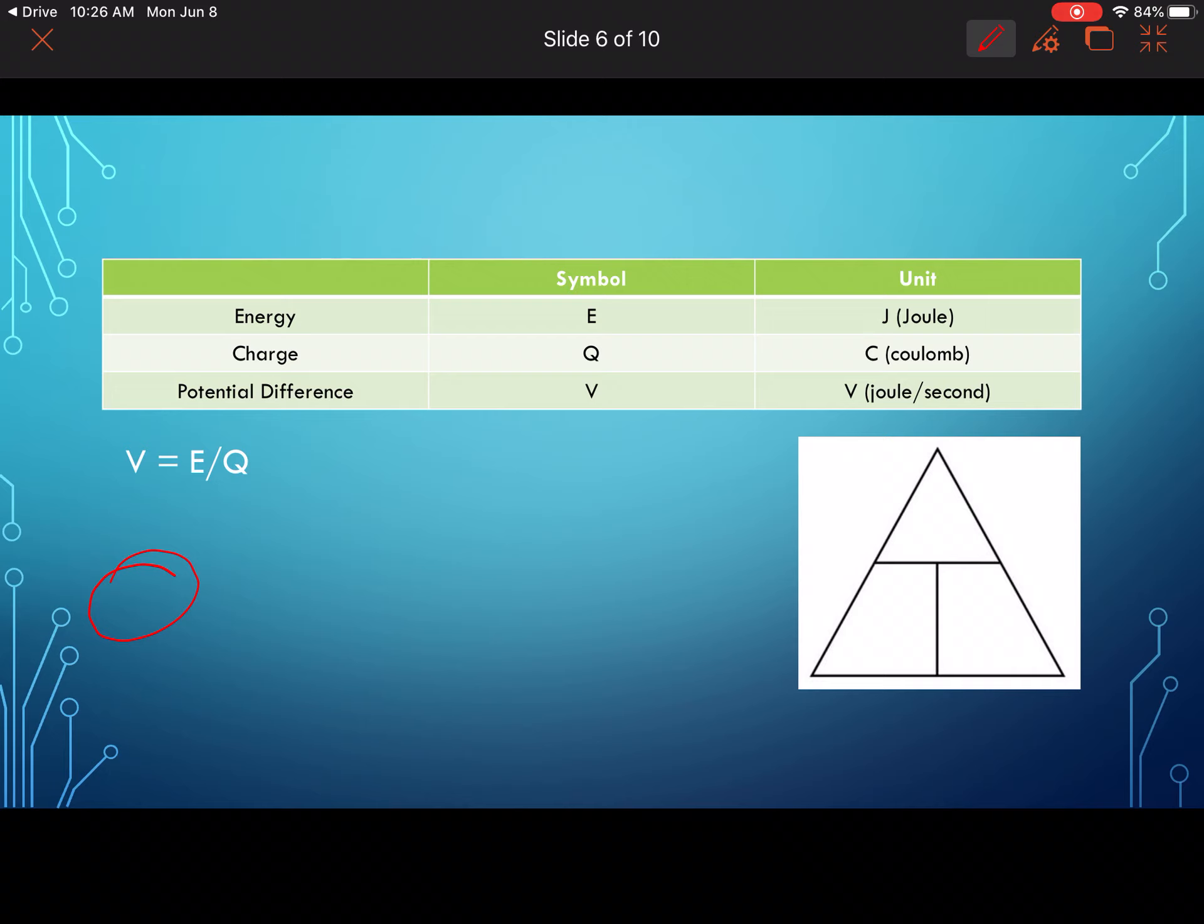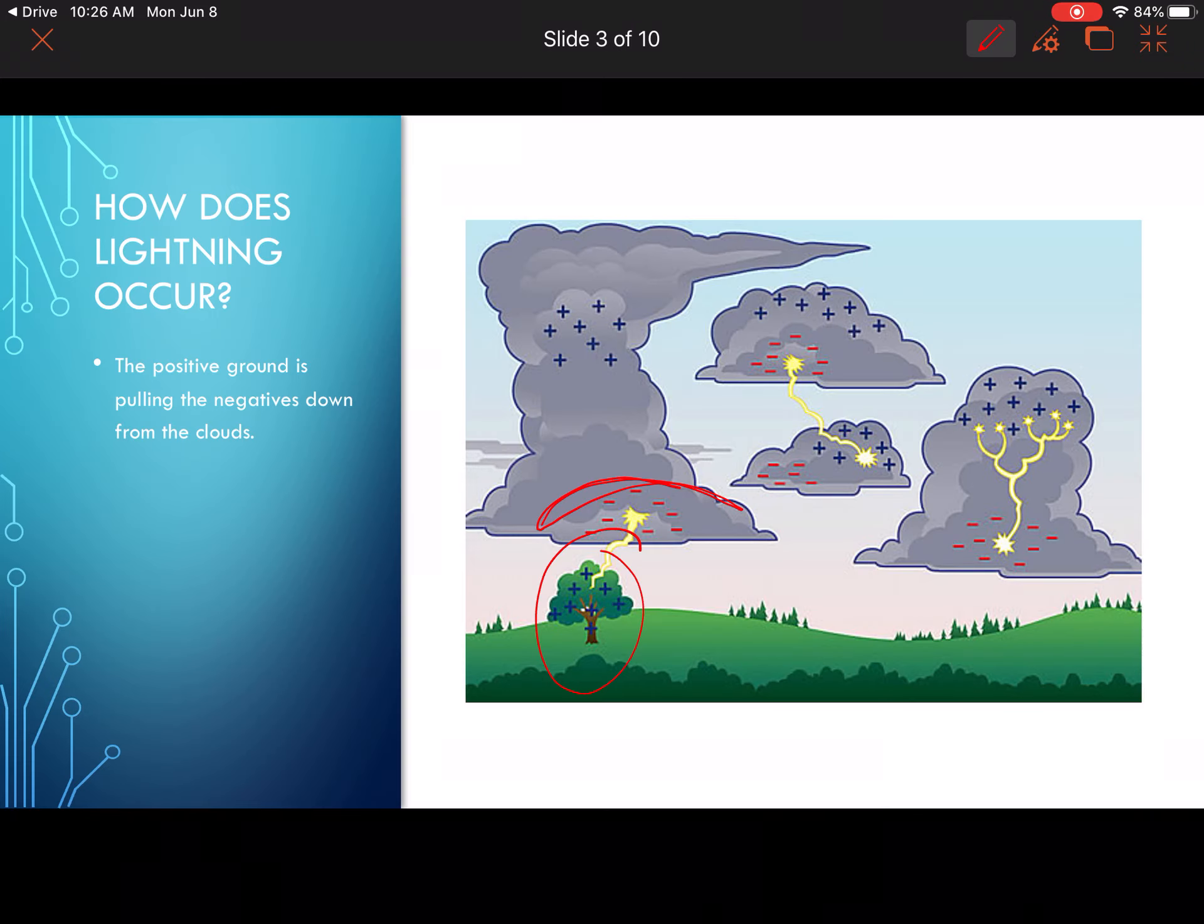A couple words to fill in here: an excess of electrons accumulate at one terminal of a battery, making it negatively charged. That's this end here - that is the negatively charged end.